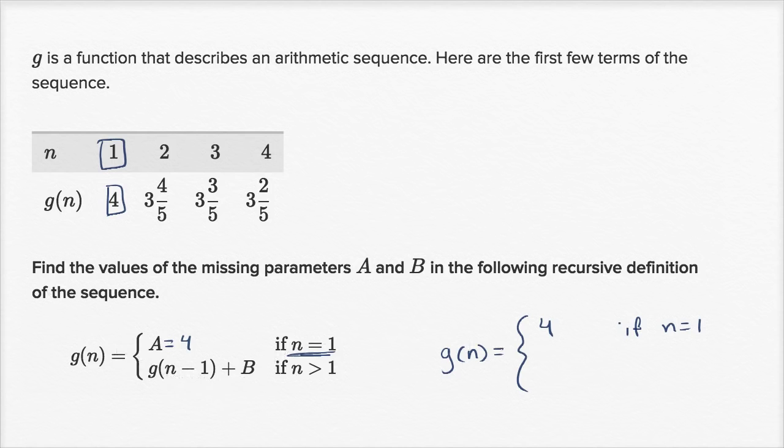Now let's think about the second line. The second line is interesting. It's saying it's going to be equal to the previous term, g of n minus one. This means the n minus one-th term plus B will give you the nth term.